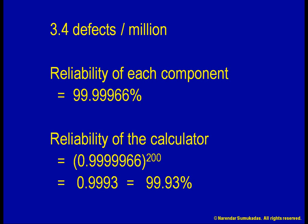This 99.93% calculator reliability is in the same ballpark as the 99.75% we associate with 3-sigma capability. As we can see here, when the number of components increases, even if we have 6-sigma processes, the final output will only be in the 3-sigma ballpark.